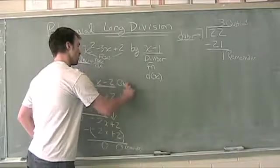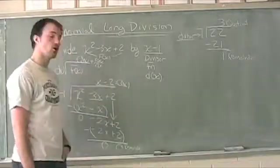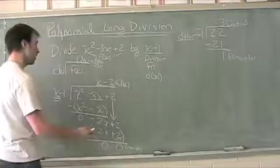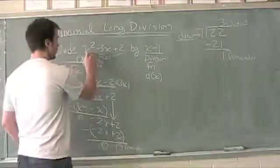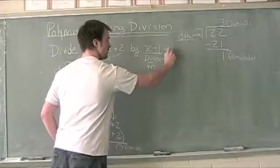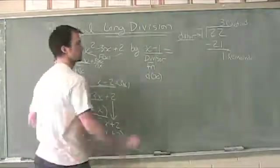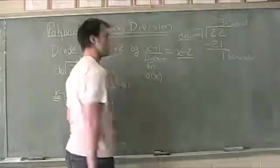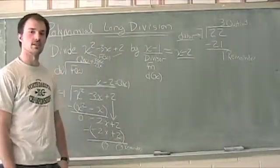When we divide x squared minus 3x plus 2 by x minus 1, it's equal to x minus 2. We'll look at some more videos of this.